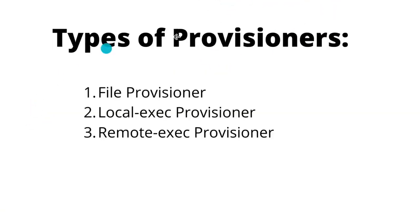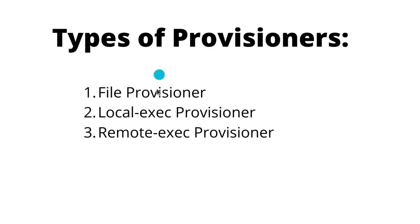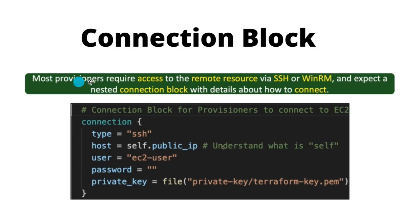While working with any Provisioner, we have to provide connection blocks. Connection blocks tell Terraform how we are going to connect to a machine. Most Provisioners require access to the remote resource via SSH or WinRM and expect a nested connection block with details about how to connect.